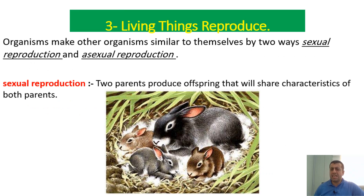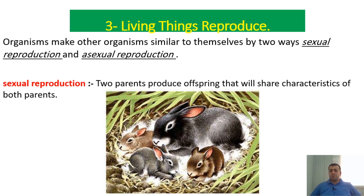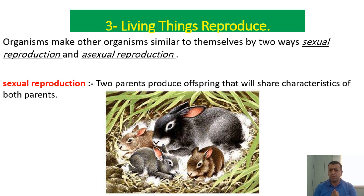The third characteristic: living things reproduce. Organisms make other organisms similar to themselves through sexual and asexual reproduction. During reproduction, the number of organisms increases — for example, two rabbits become five. The number of members increases.